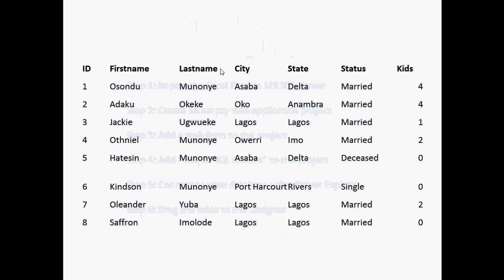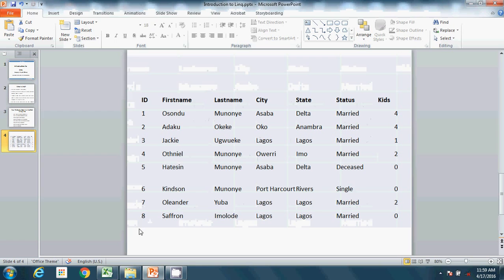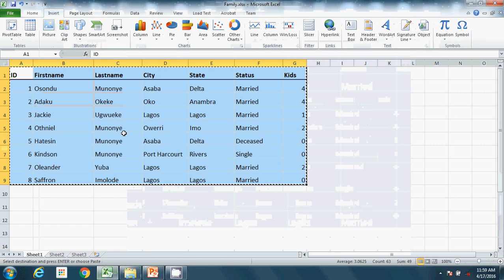Just have a look at the data I want to display. This is data of the Munoye family — everyone here are my siblings and me, there are six of us. I love them all. So this is an Excel sheet — I named it family.xlsx. That's the Excel sheet we'll be working with.